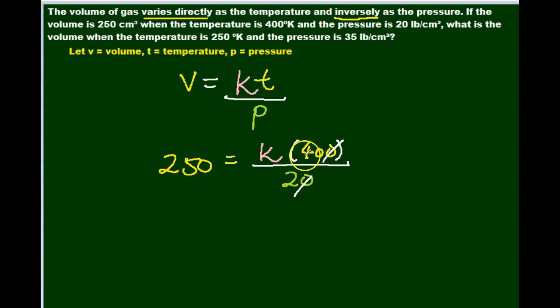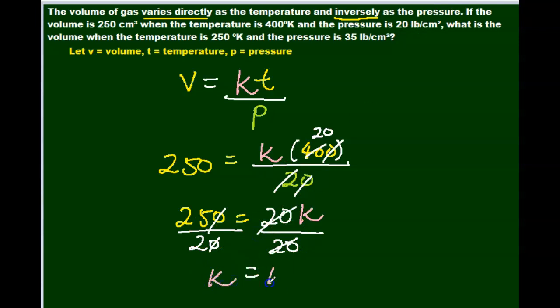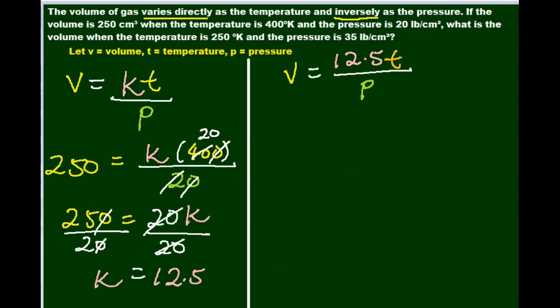Cancel out our zeros. 40 divided by 2 is 20. 250 equals 20k. Divide both sides by 20, zeros cancel out, the 20s cancel out, 25 divided by 2 equals 12.5. Now that we have our value of k equals 12.5, we can plug it back in our equation, and we can say v equals 12.5t over p.